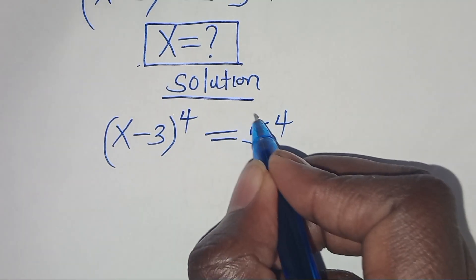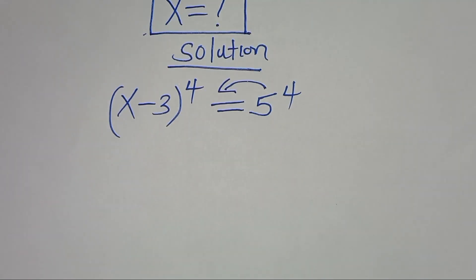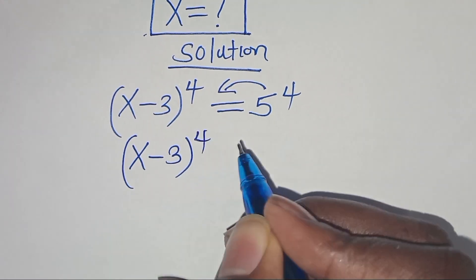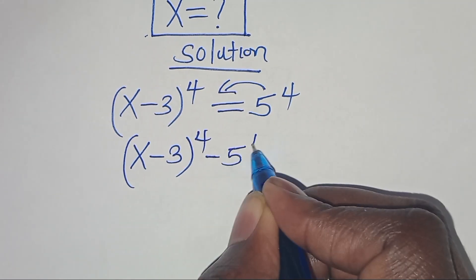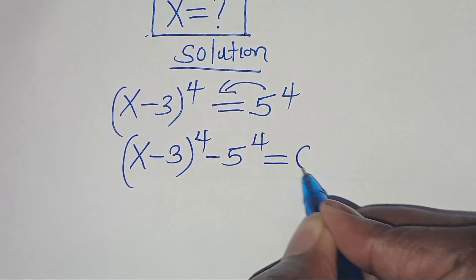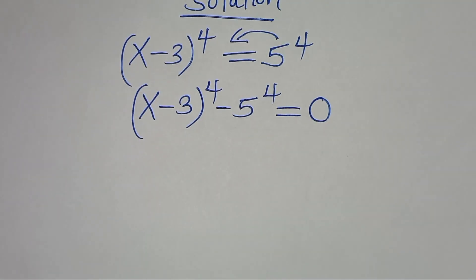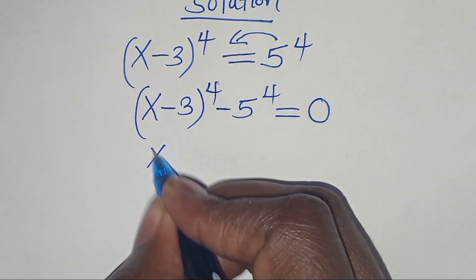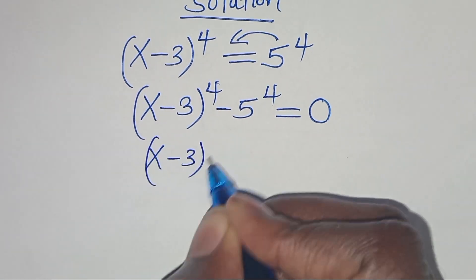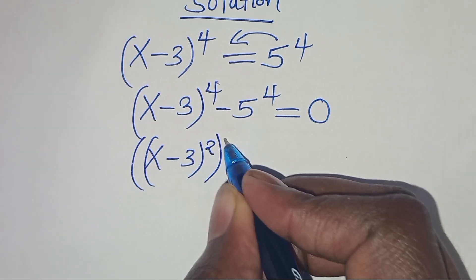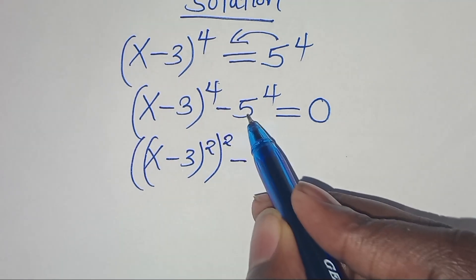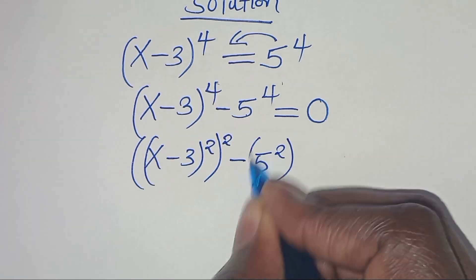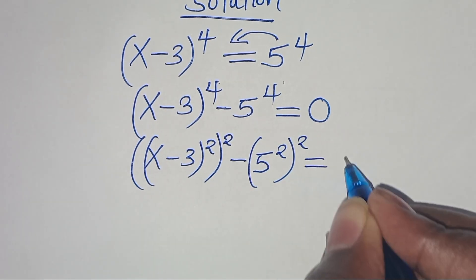Let's take 5 to the power of 4 on the left hand side, so that now we have x minus 3 to the power of 4, subtract 5 to the power of 4, this is equal to 0. We can express x minus 3 to the power of 4 as x minus 3 raised to the power of 2, everything raised to the power of 2, subtract 5 to the power of 4, which we can express as 5 squared raised to the power of 2. This is equal to 0.